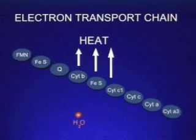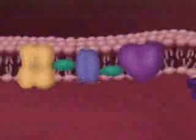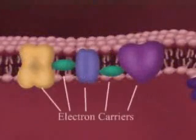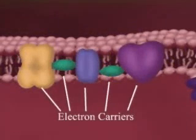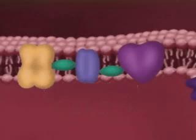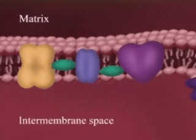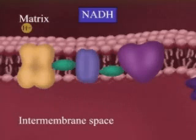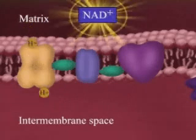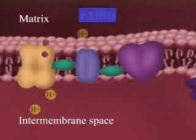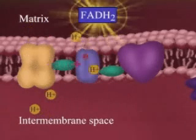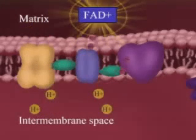How does the electron transport chain produce ATP? The carrier molecules use the energy from the electrons to actively transport protons from the matrix to the intermembrane space. This creates a proton concentration gradient.